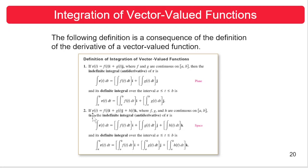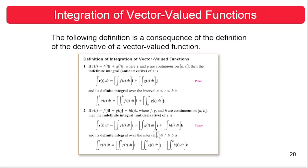In three-dimensional space, if r of t is f of t i plus g of t j plus h of t k, where f, g, and h are continuous on the closed interval [a, b], then the indefinite integral or anti-derivative of r is given as: the integral of r of t dt equals the integral of the first component times i, plus the integral of the second component times j, plus the integral of the third component times k.